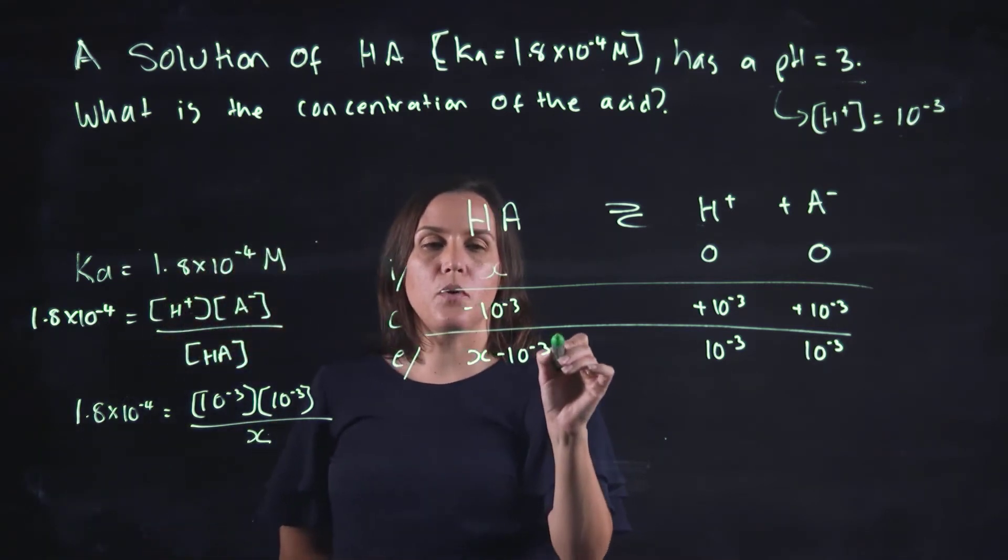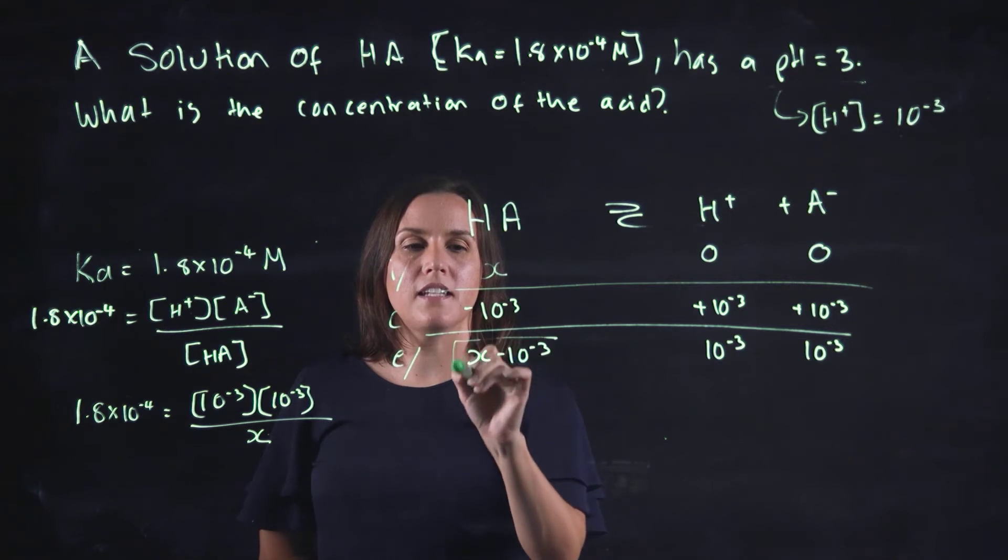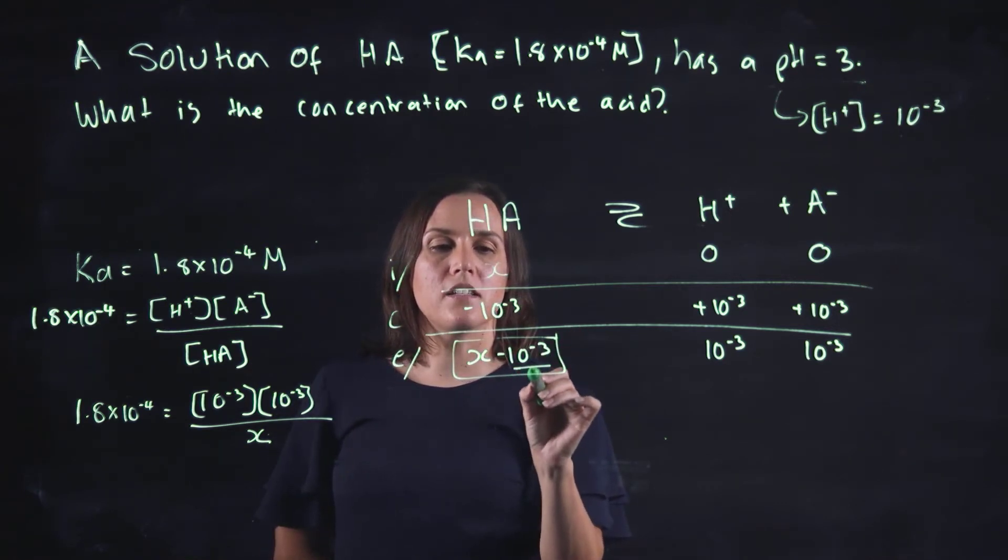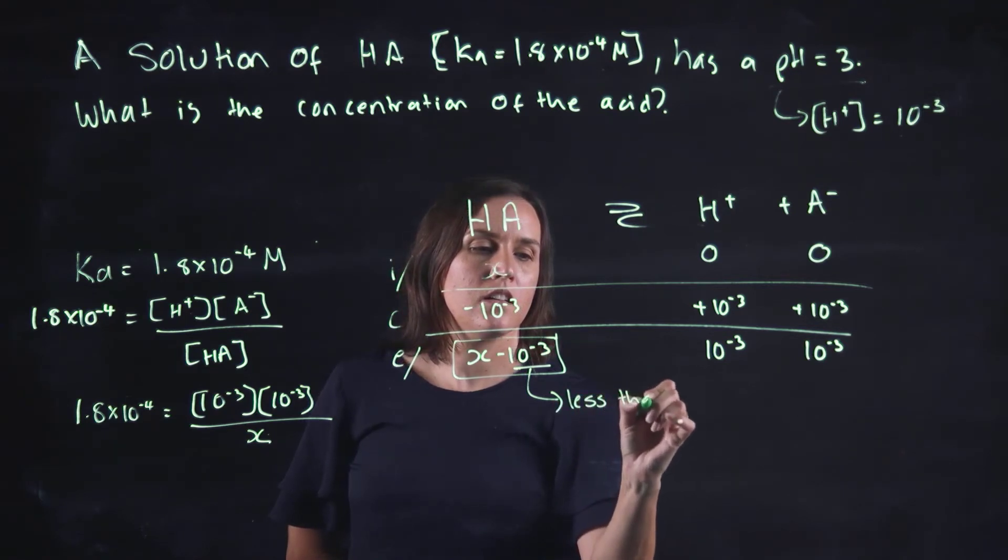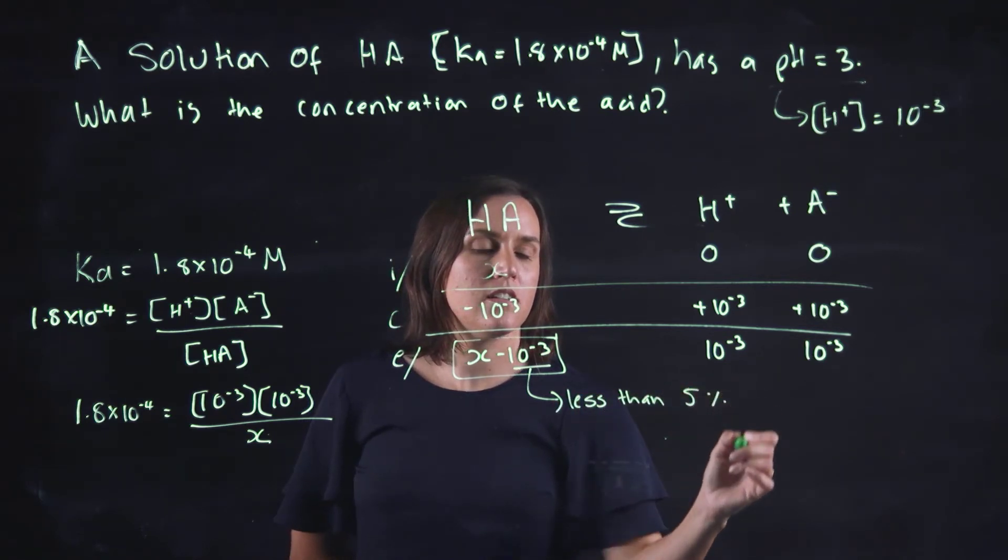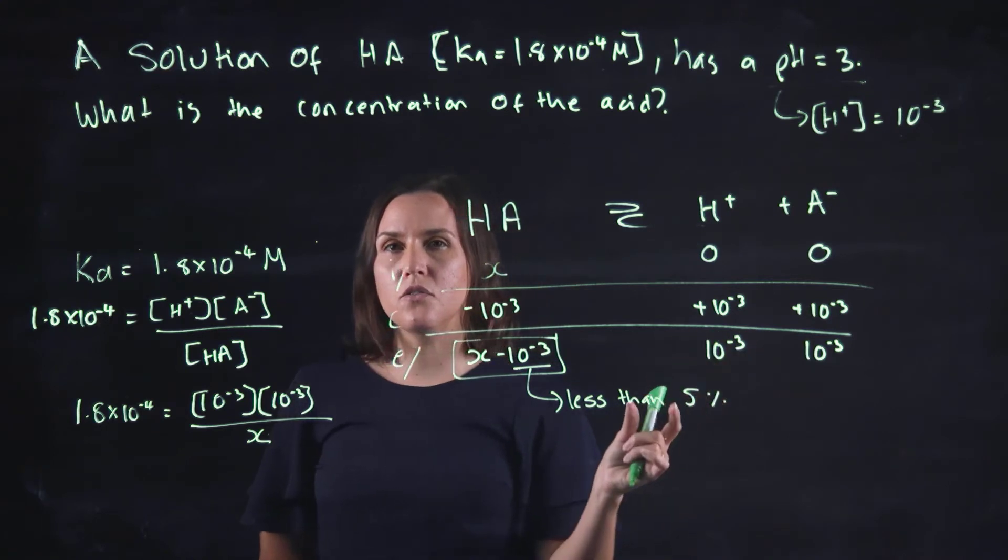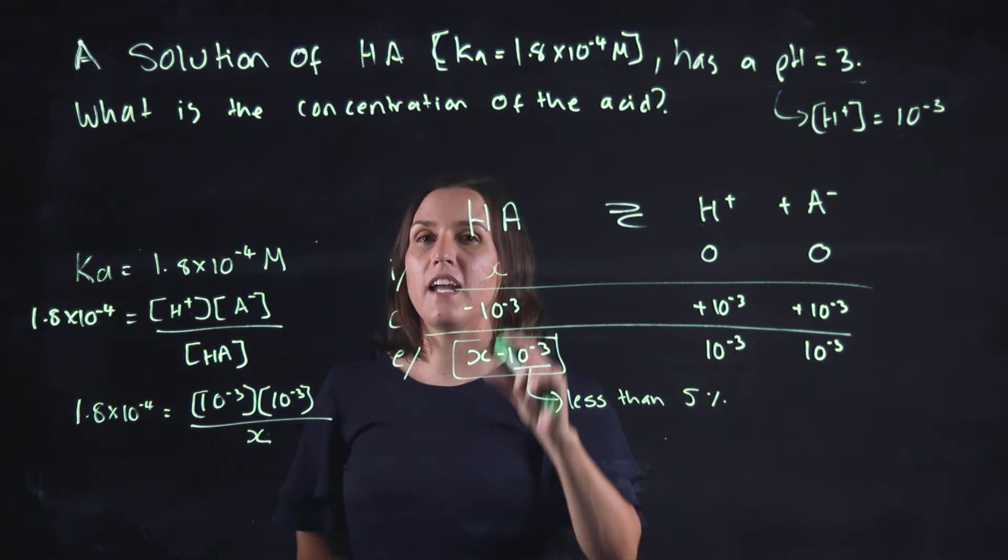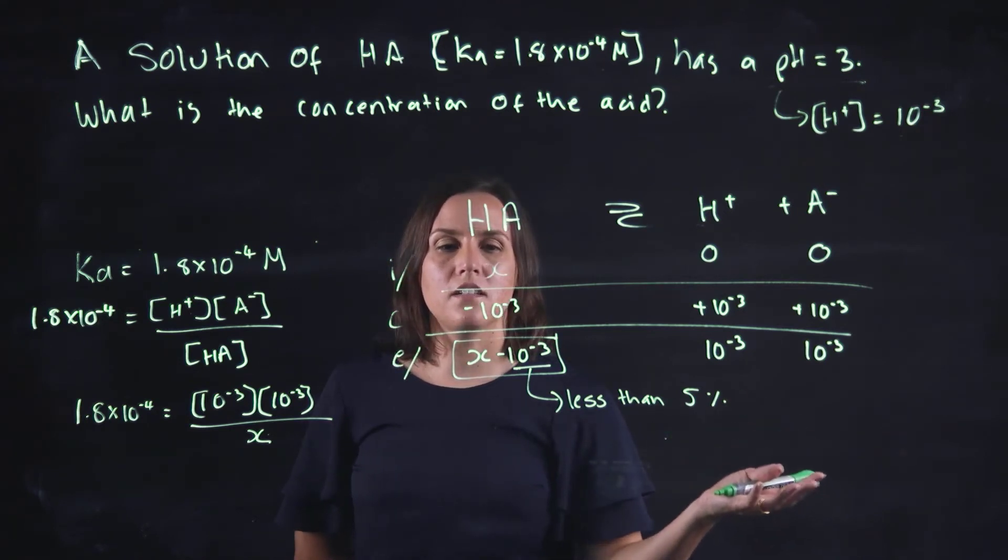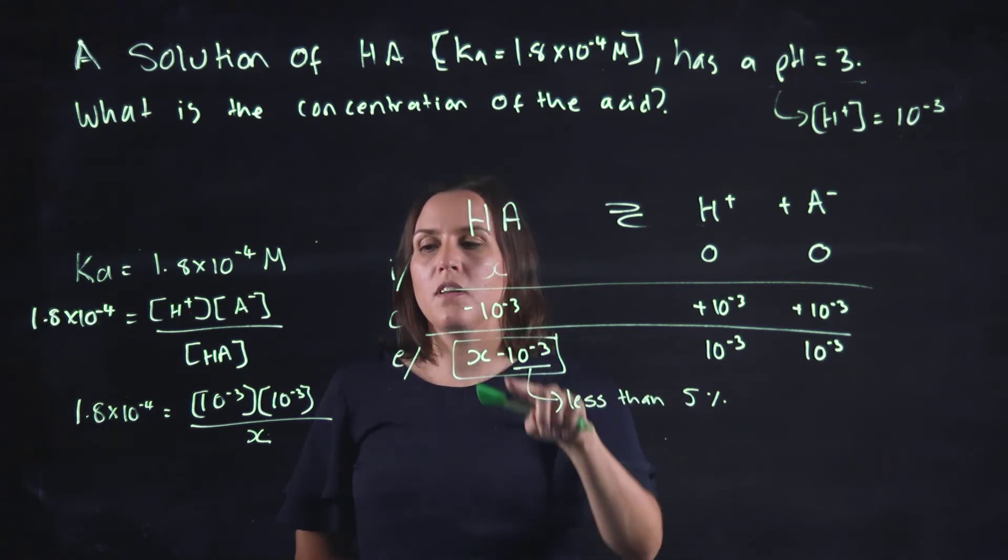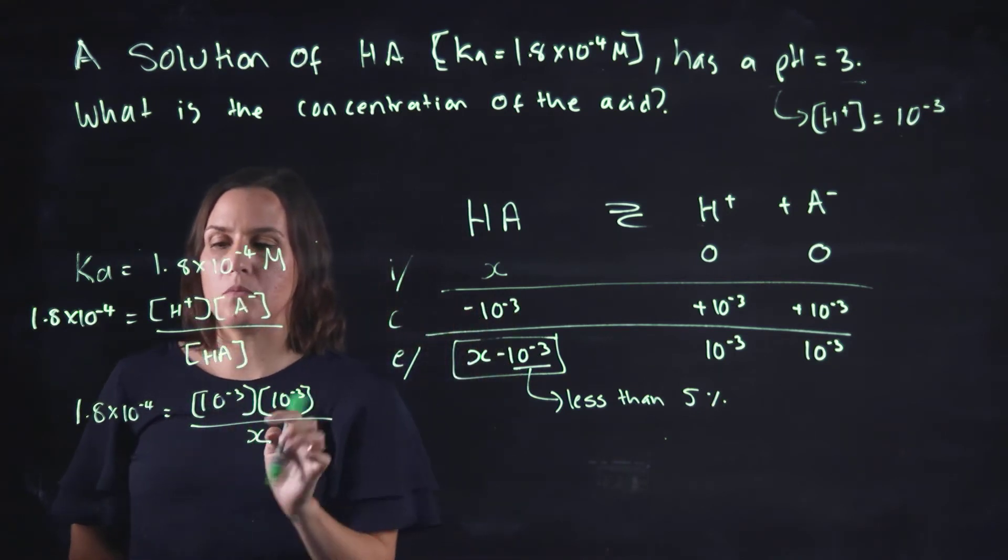Now, ideally, we would be using X minus 10 to the minus 3. But if 10 to the minus 3 is less than 5%, then it's such a little value that it wouldn't actually change the overall calculation. So I'm going to make the assumption that it's less than 5% of the original, just to make the maths a little bit easier.